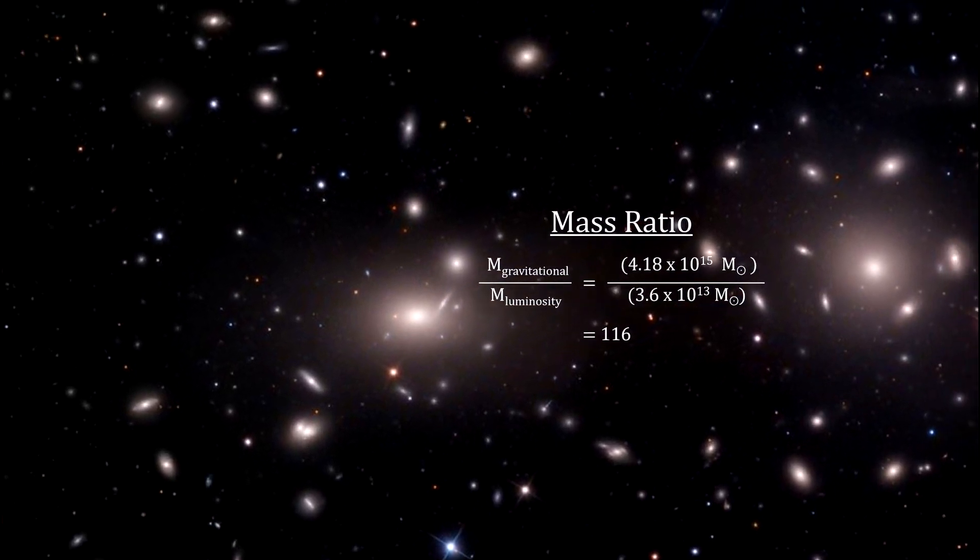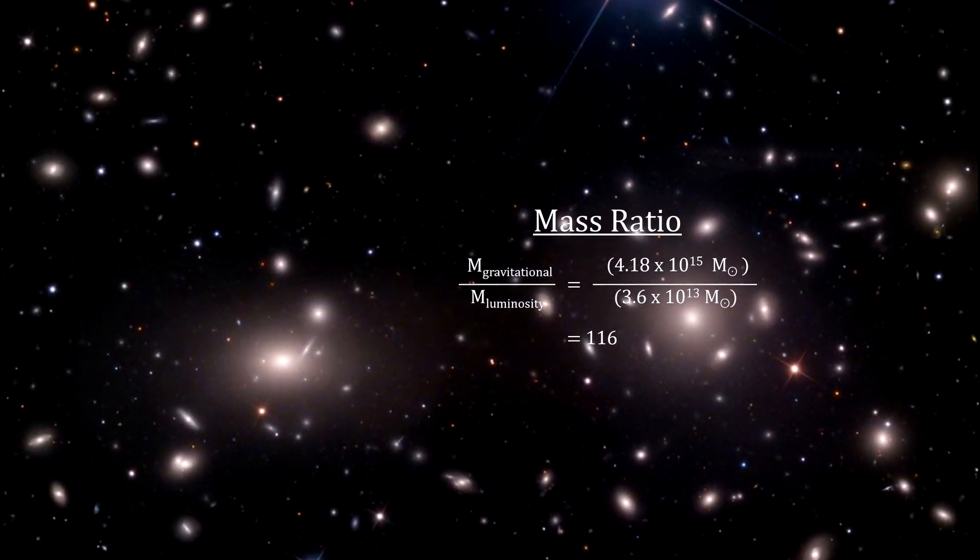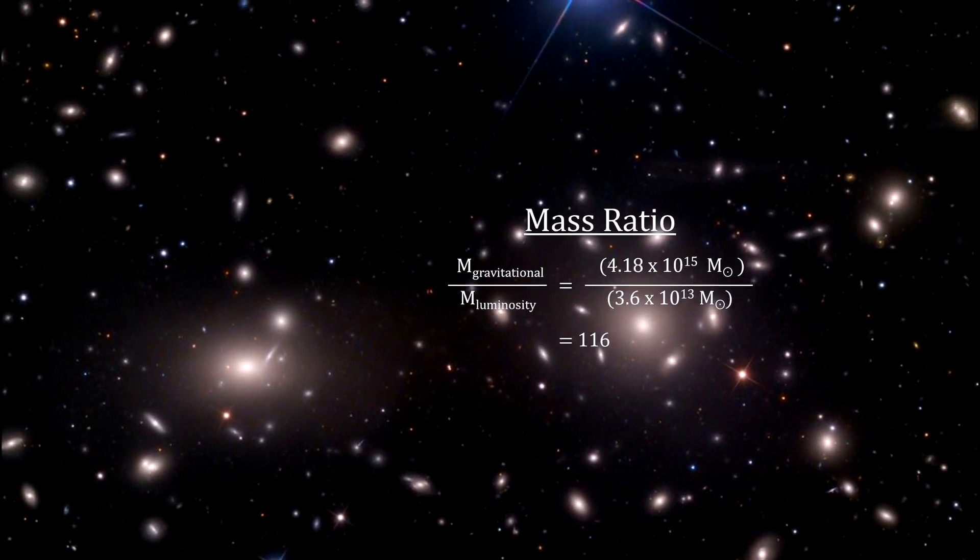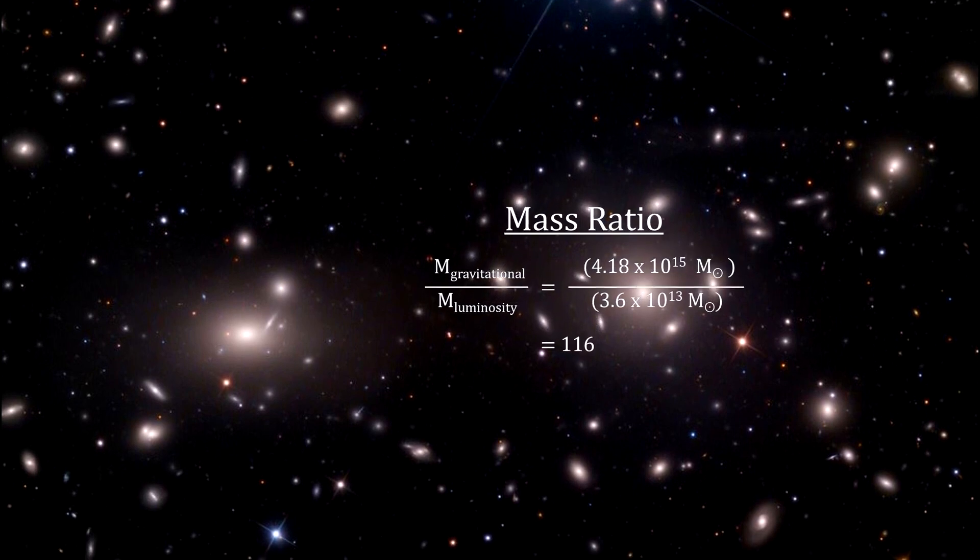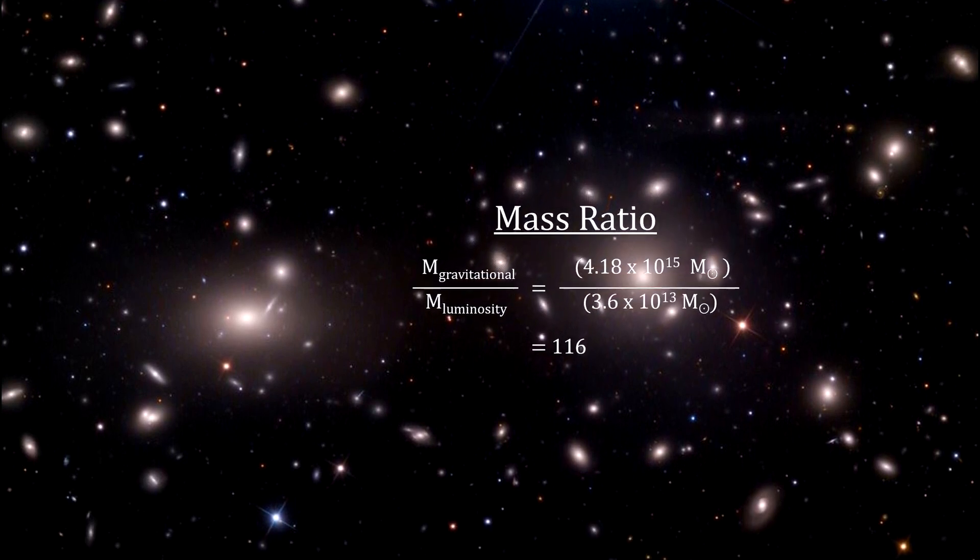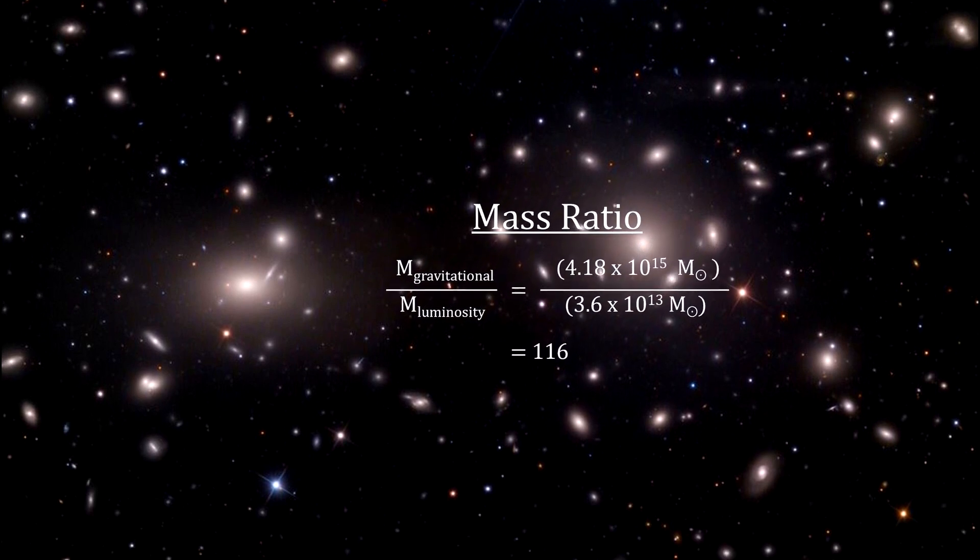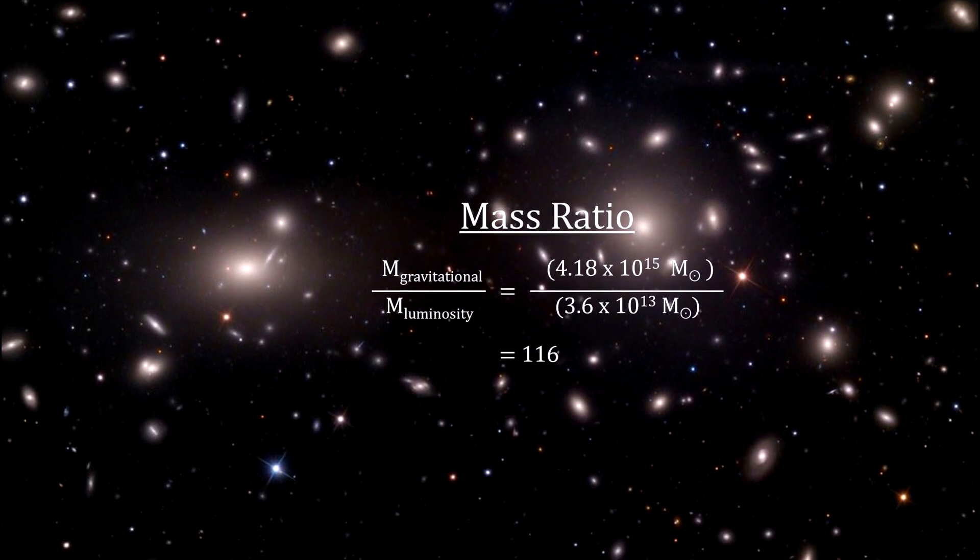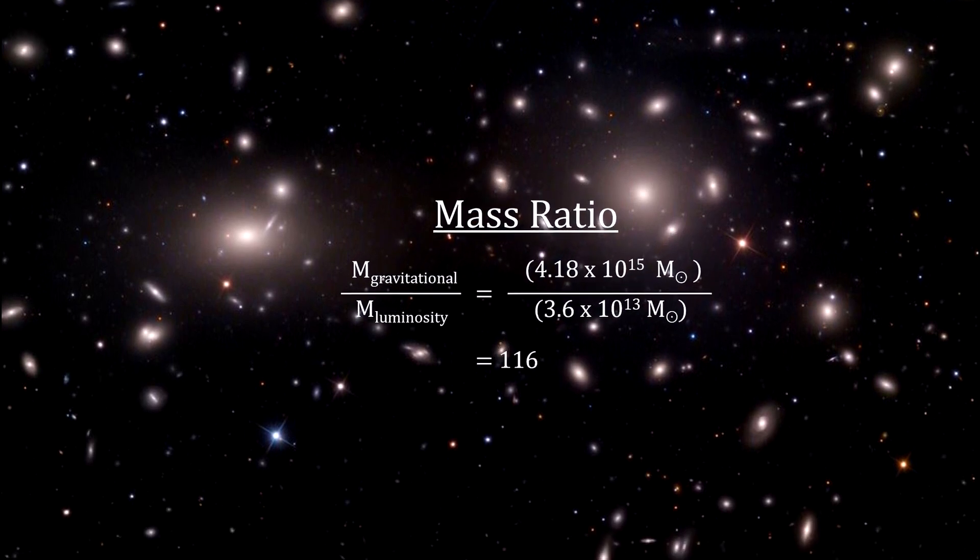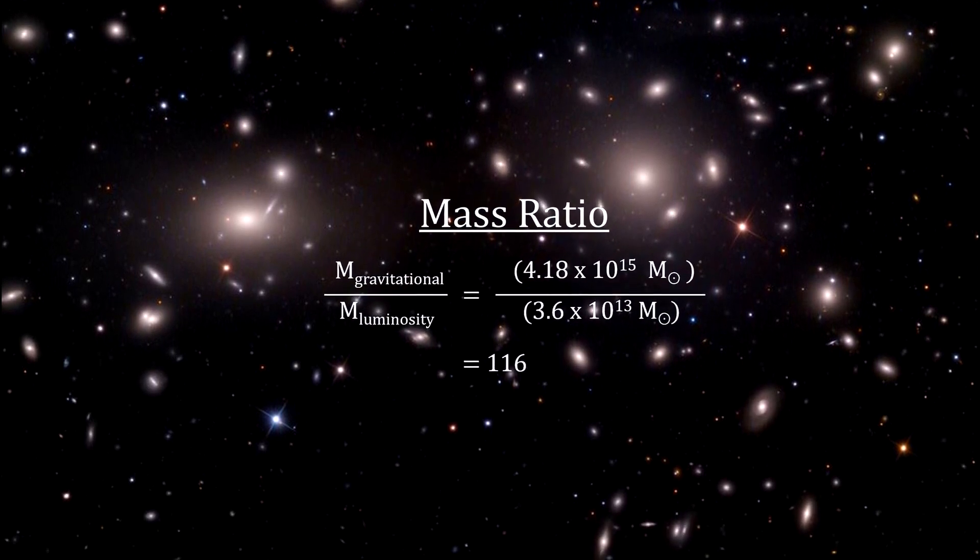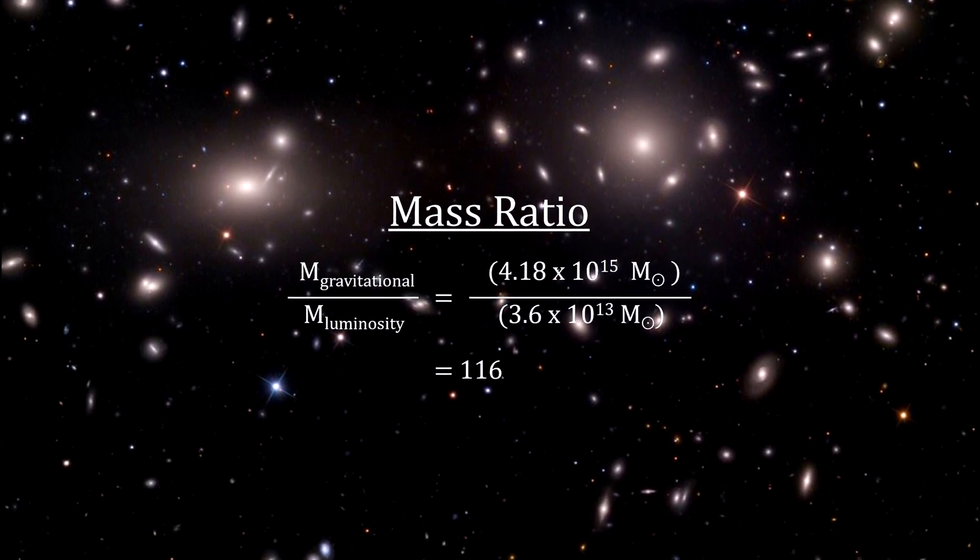Zwicky concluded that either the laws of gravity as we know them, Newton's and Einstein's, did not work for volumes as large as the Coma cluster, or the luminous matter is only a very small part of the total matter of the cluster. He called the rest of the matter dark matter, and suggested that gravitational lensing could help quantify this dark matter. But back in the 1930s, nobody believed him.